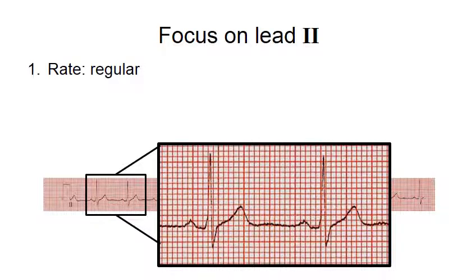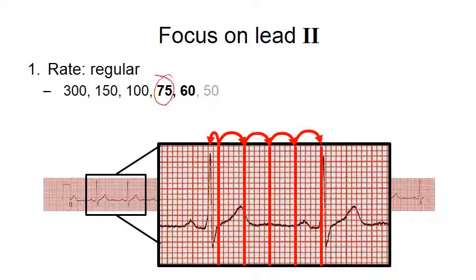So for this rhythm, let's start with that bar: 300, 150, 100, 75, and maybe a little bit left. So it would be between 75 and 60. Or I could have just said, that's 4.5 big boxes. I'll divide 300 by 4.5 big boxes, and it's about 66 or 67 beats per minute.